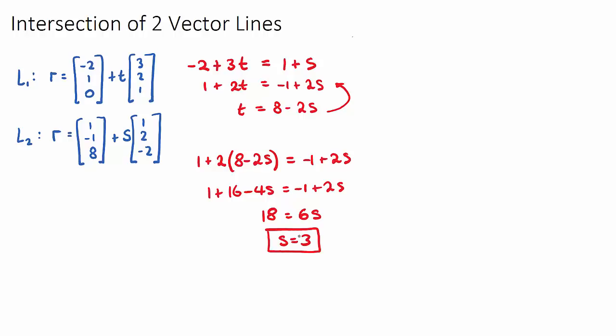Now we can solve, we can sub s of 3 back in to find t, because t will therefore just be 8 minus 2 times 3. 8 minus 6 is 2. But we actually don't need to find both of these variables.